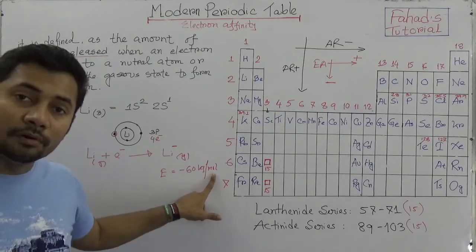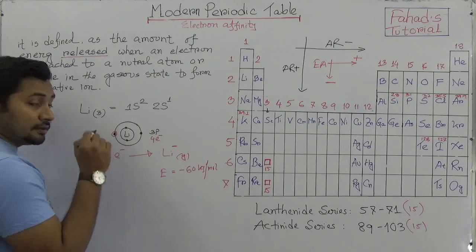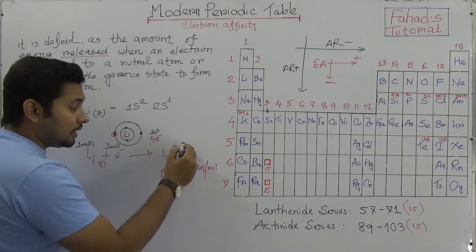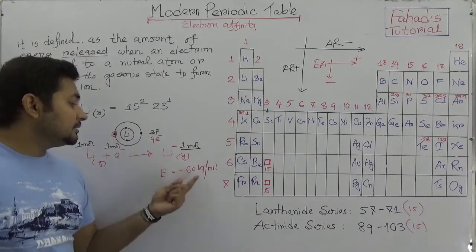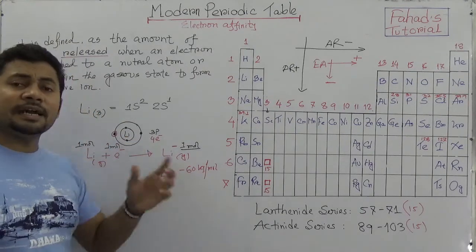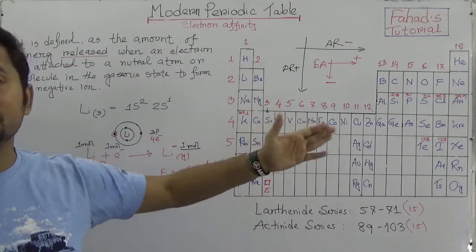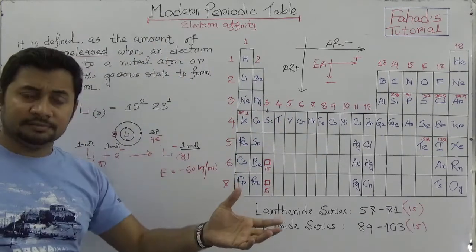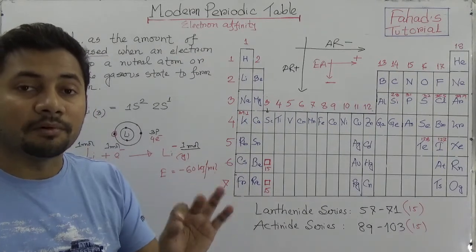If we say one mole of lithium and we are adding one mole of electrons, it becomes one mole of negative ions, and the energy will be minus 60 kilojoule per mole. You can search on Google to see the electron affinity values of all elements.